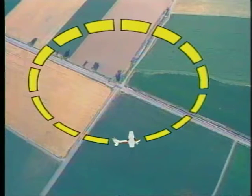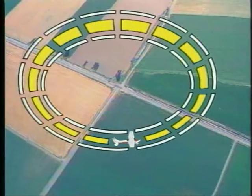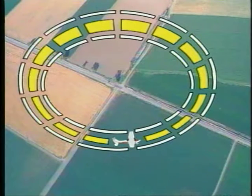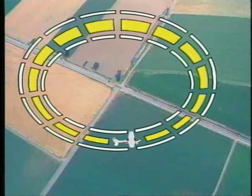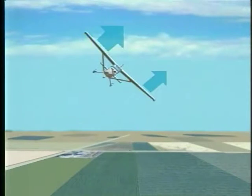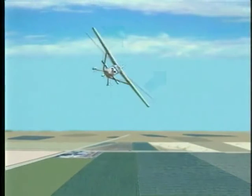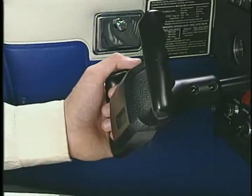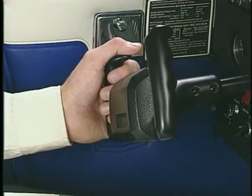During this maneuver, you will most likely experience an overbanking tendency. This is due to the wing on the outside of the turn traveling a greater distance than the inside wing. Since it is traveling farther, it has a faster airflow. As more air passes over an airfoil, more lift is produced. This increase in lift on the outside wing causes the airplane to roll beyond the desired bank angle. To counter this tendency, you must apply slight aileron pressure opposite the direction of turn.